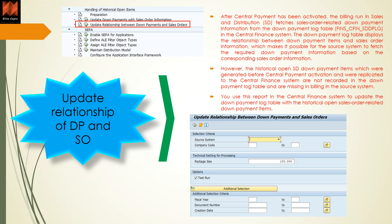You use this report in the CFIN system to update the down payment lock table with historical data for sales order-related down payment items. You select the source system, company code, packet size, and fiscal year. Optionally, you can provide a document number from/to range — it is not mandatory — and then execute the report.